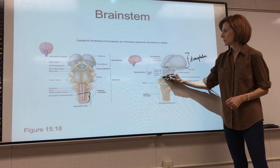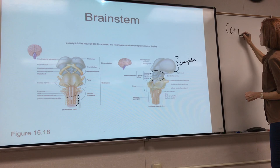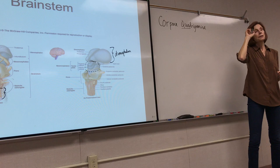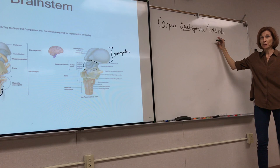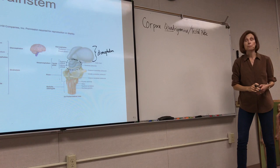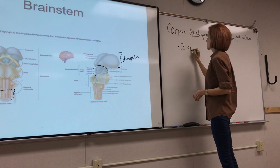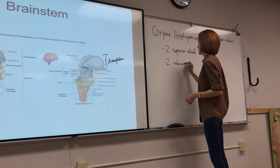Talking about the midbrain — on the posterior side there are four little bulges. These are called the corpora quadrigemina, meaning 'four bodies,' also called the tectum or tectum plate. The two superior bumps are the superior colliculi, and the two inferior bumps are the inferior colliculi. Together they make up the corpora quadrigemina.